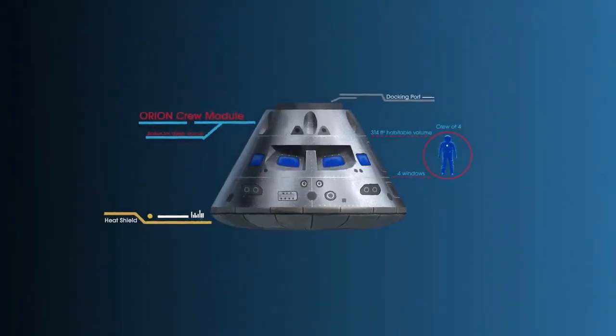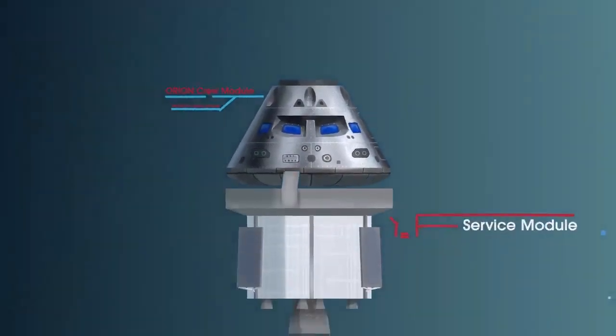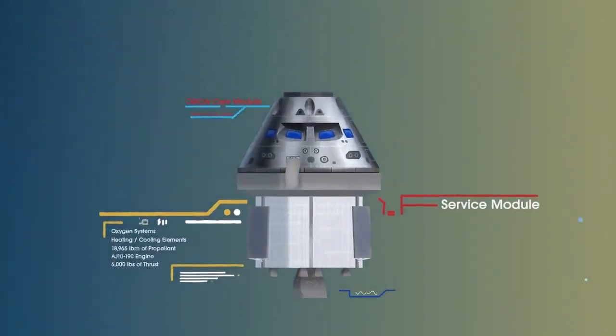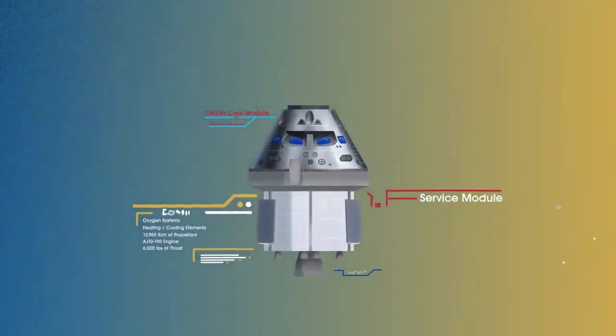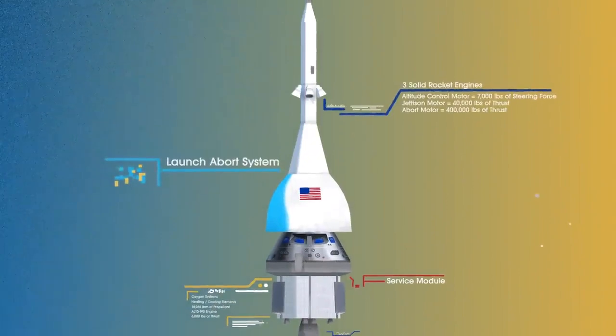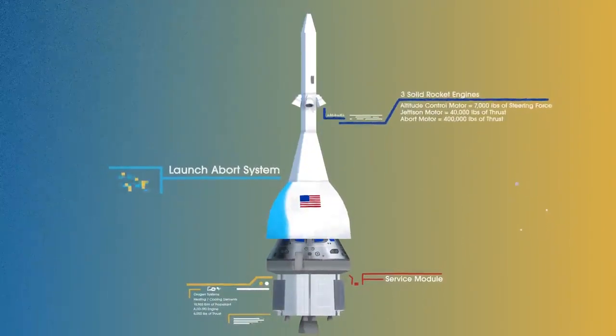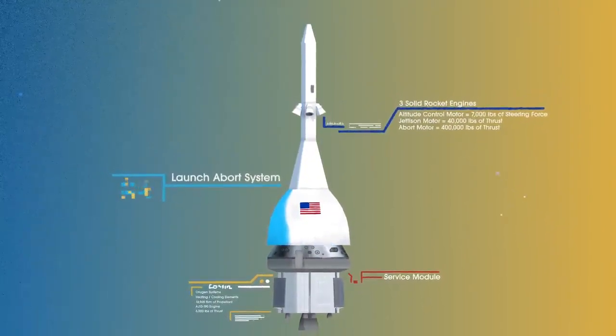The crew module, where up to four astronauts will live and work throughout the flight. The service module, with life-support systems for the crew and its own engine and fuel reserves, and a launch abort system, with engines capable of pulling the crew module to safety during launch should anything go wrong.